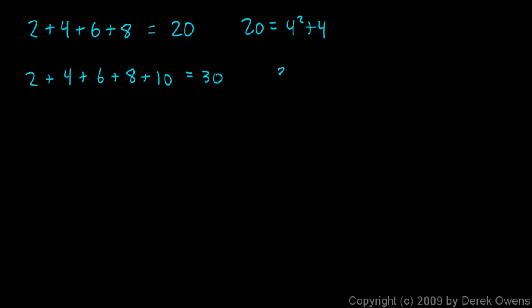And I notice that 30 is equal to 5 squared plus 5. So I have five terms, and the result I get is equal to 5 squared plus 5. That's kind of interesting too.